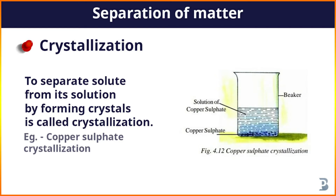solute is separated in the form of crystals. For example, copper sulfate crystallization. In this experiment, we need some quantity of water in a beaker and some quantity of copper sulfate. Add copper sulfate to the water and stir it. After dissolving, add more and more copper sulfate until we reach a saturated solution, meaning no more copper sulfate can be dissolved.